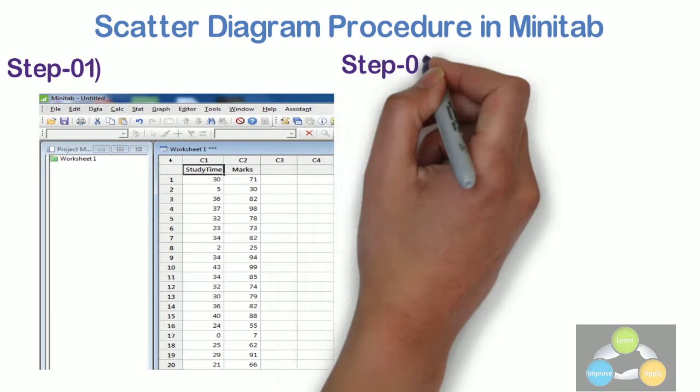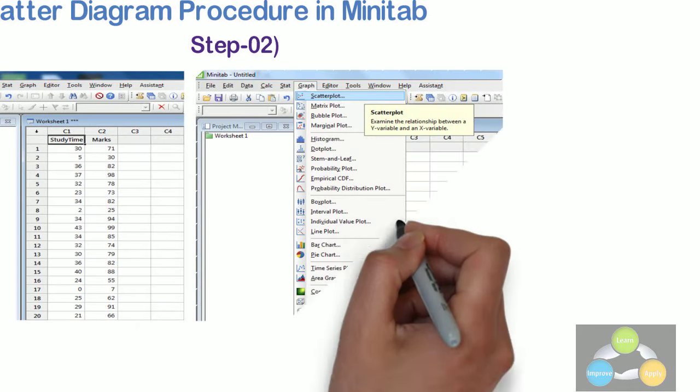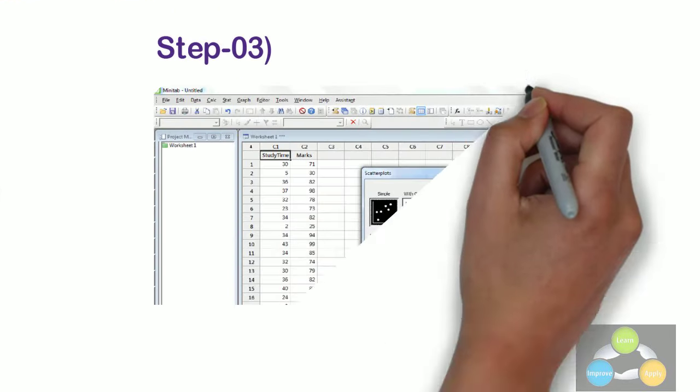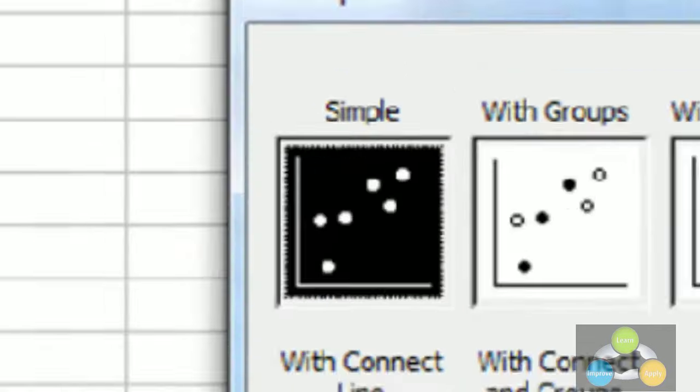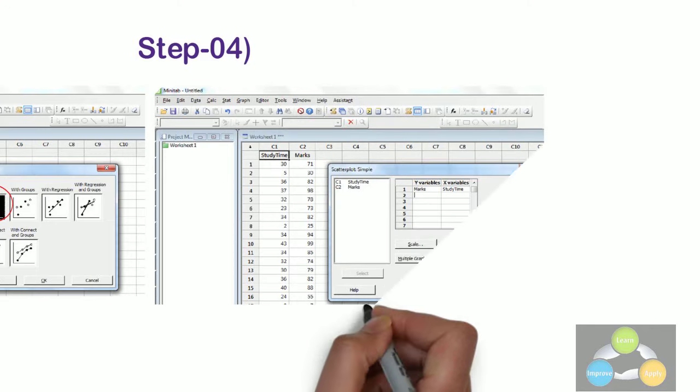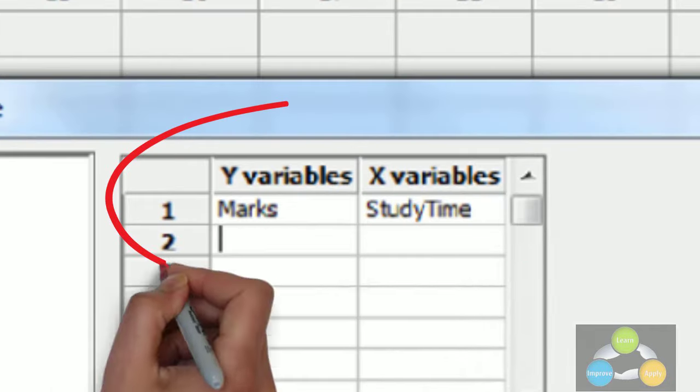Step 2. Click in the graph menu and select scatter plot to draw the scatter diagram. Step 3. Scatter plot window will be opened. Select the simple option. Step 4. In Y variables select study time and in X variables select marks and then click OK.